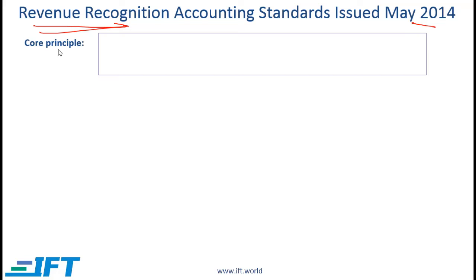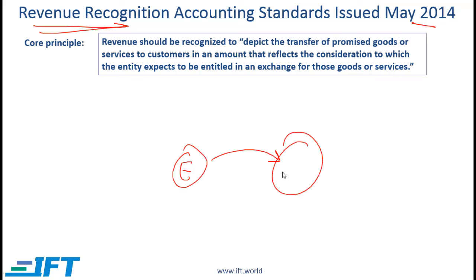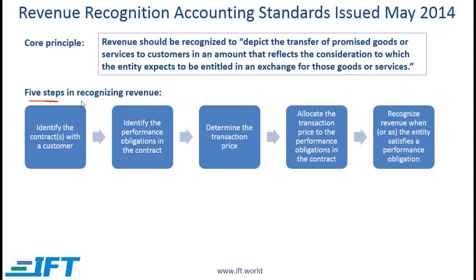The core principle of the converged standard is: revenue should be recognized to depict the transfer of promised goods or services to customers in an amount that reflects the consideration to which the entity expects to be entitled in exchange for those goods or services. In other words, when an entity delivers goods or services and either receives or expects to receive payment, the company can recognize revenue. More detail is captured in the 5 steps of revenue recognition.